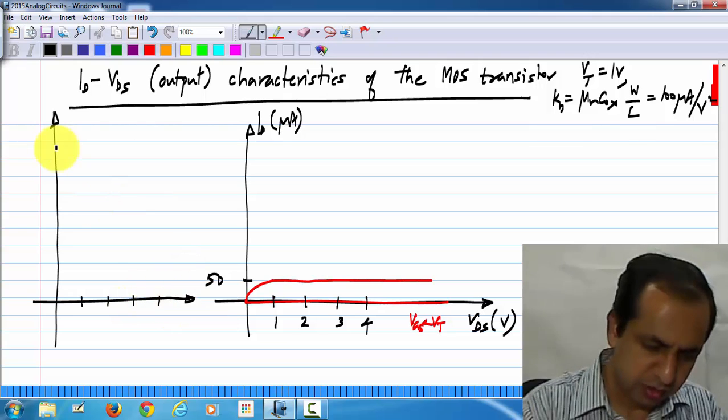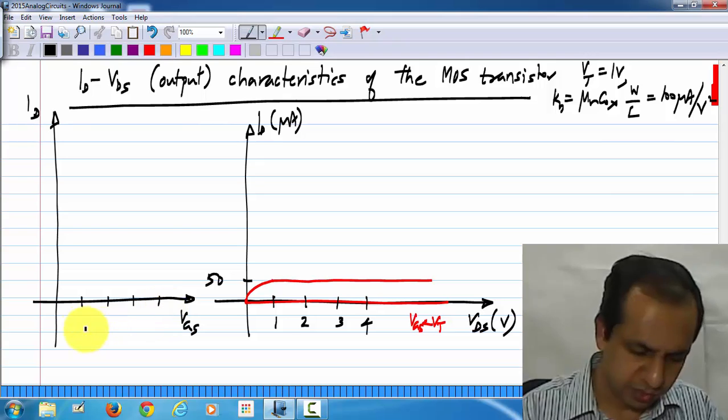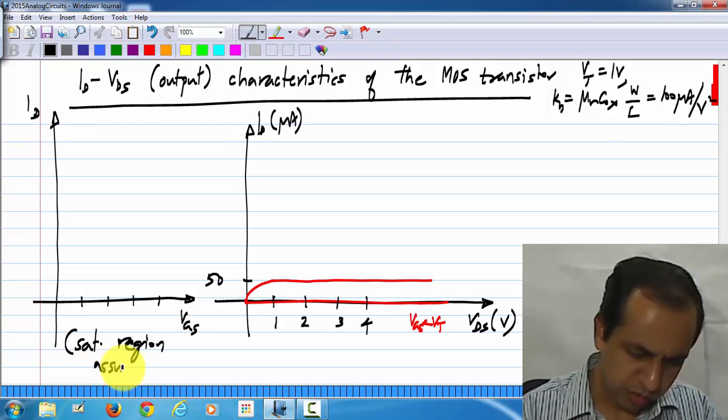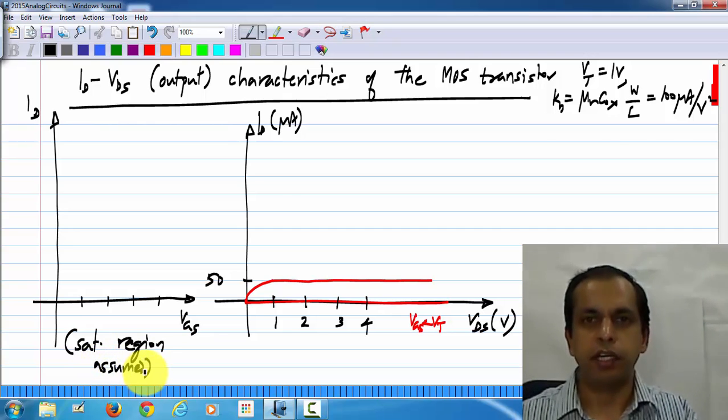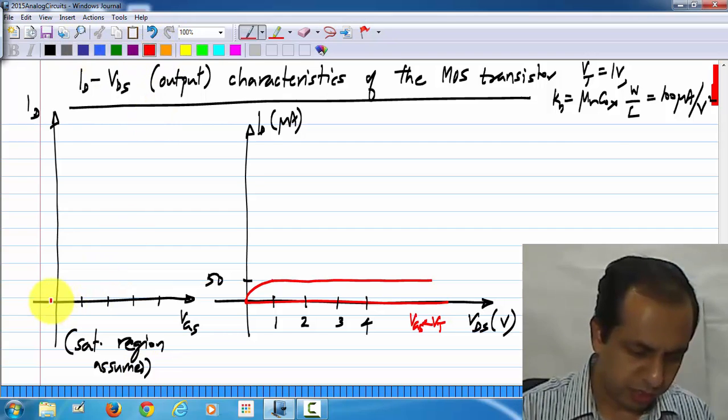And also, if I plot the ID versus VGS assuming saturation region, in this case, which means that VDS is assumed to be large enough, we would get a parabola.